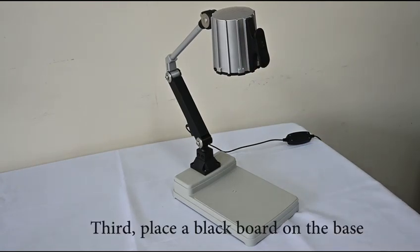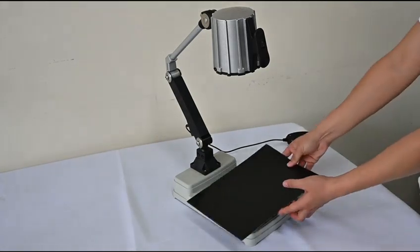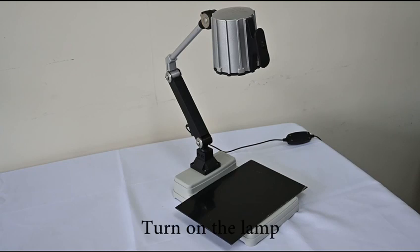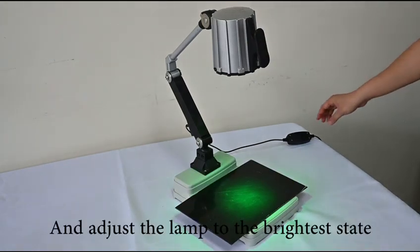Third, place the panel board on the base. Fourth, turn on the lamp, then adjust the lamp to the brightest state.